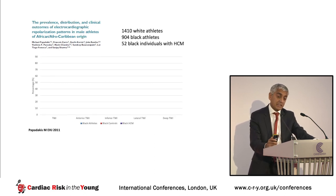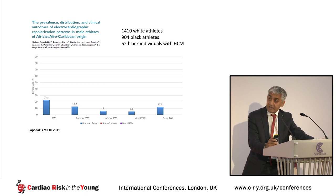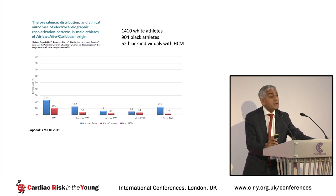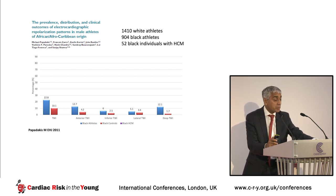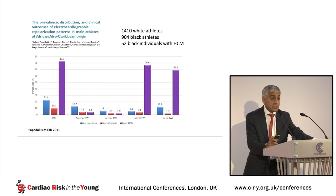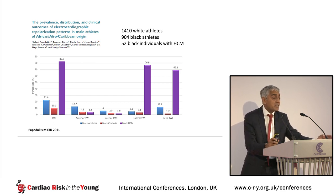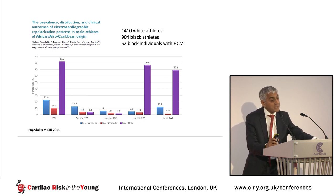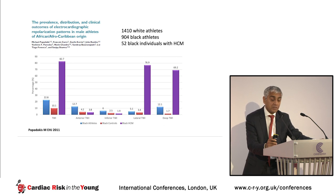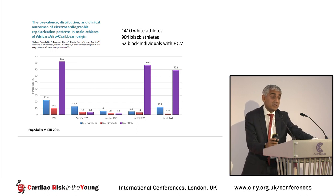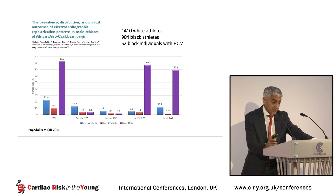Comparing anterior T wave inversion in black and white athletes with T wave inversion in black people with hypertrophic cardiomyopathy, T wave inversion is much more common in HCM, but is predominantly distributed in the lateral leads. This supports that lateral T wave inversion should be considered abnormal irrespective of ethnicity, while black athletes actually have a higher prevalence of anterior T wave inversion than even people with hypertrophic cardiomyopathy.